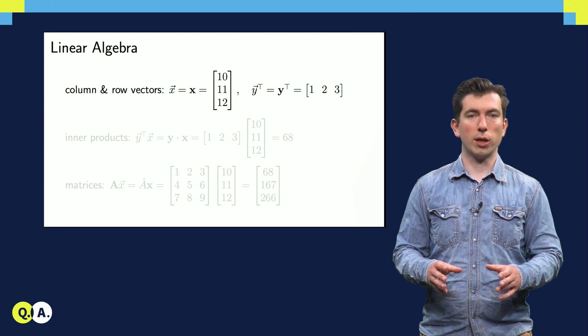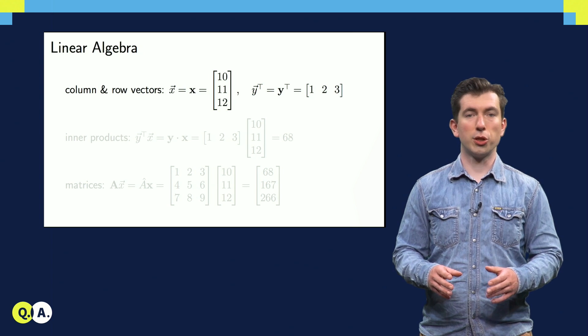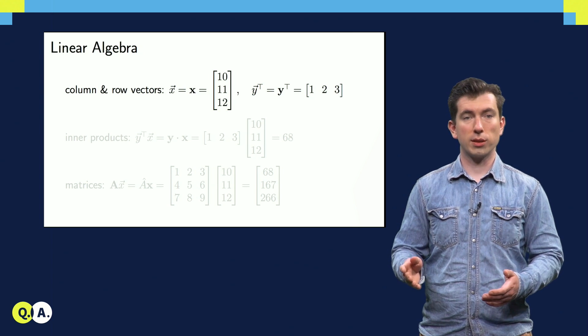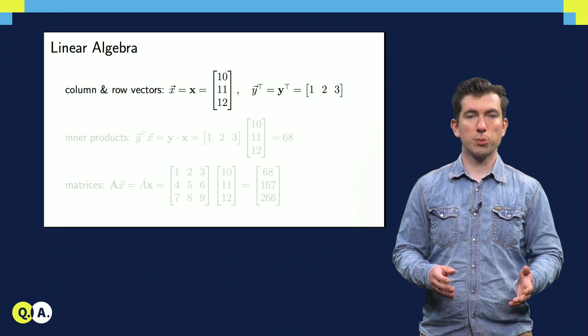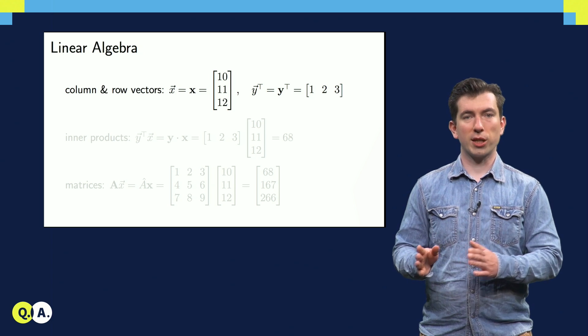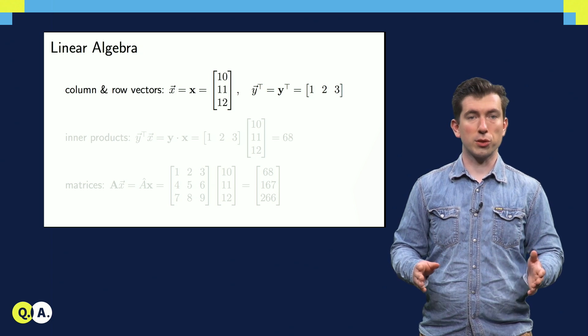You're likely already familiar with linear algebra, which has column vectors denoted with an arrow or with boldface type. It also has a transpose operation that maps column vectors to row vectors, and vice versa.